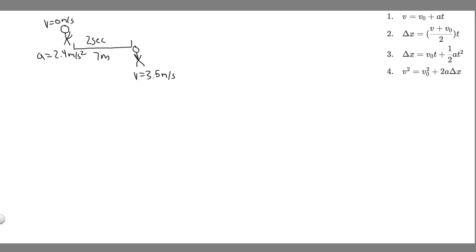In this problem, we're told a bicyclist is finishing his repair on a flat tire when a friend rides by with a constant speed of 3.5 meters per second. Two seconds later, the bicyclist hops on his bike and accelerates at 2.4 meters per second squared until he catches his friend. Part A: how much time does it take until he catches his friend? Part B: how far has he traveled in this time? And Part C: what was his speed when he catches up?